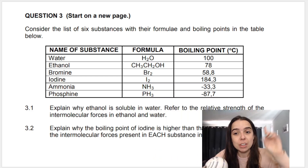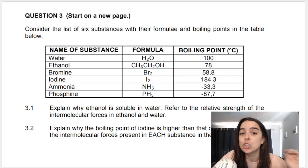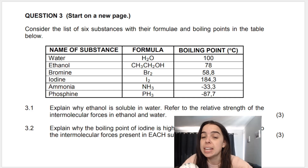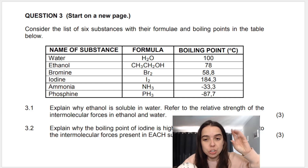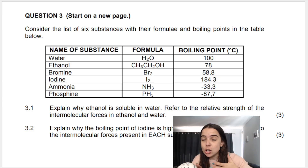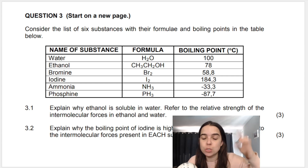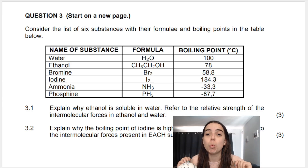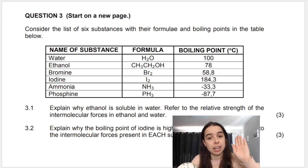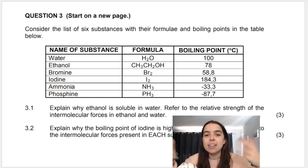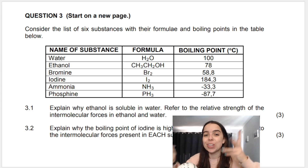So question 3.1, three marks: explain why ethanol is soluble in water, referring to the relative strength of intermolecular forces in ethanol and in water. You need to read the question carefully — they're asking why it is soluble, so we need to speak about what intermolecular forces exist in ethanol and water, compare their strengths, and explain why that is the reason ethanol is soluble in water.